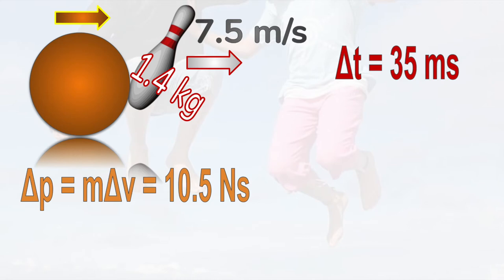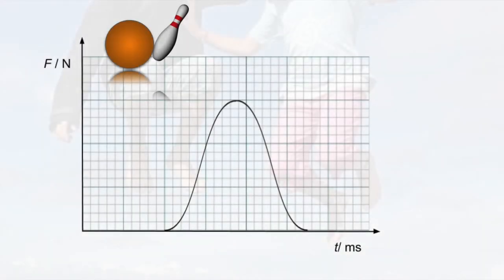Now let's draw a graph of the variation of the force and time. We don't know what the exact shape will be, but the force will probably increase to a maximum and then decrease again, all within 35 milliseconds.